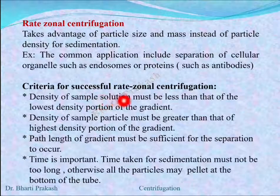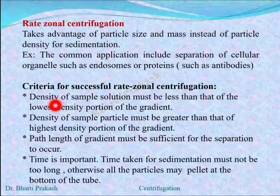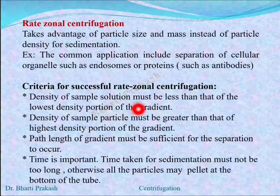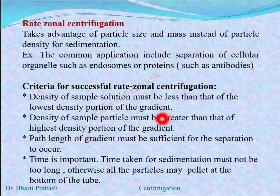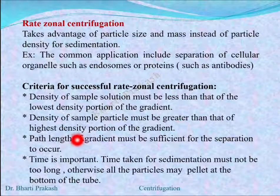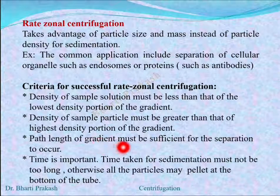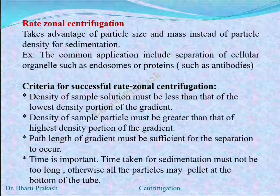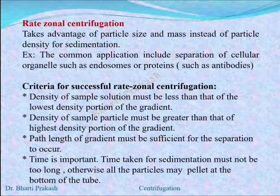The criteria for successful rate zonal centrifugation are: the lowest density of the sample solution must be less than that of the lowest density portion of the gradient. Similarly, the highest density of the sample particle must be greater than that of the highest density portion of the gradient. The path length of the gradient must be sufficient for the separation to occur. The time is very important — the time taken for sedimentation must not be very long, because if it is long, all the particles may pellet at the bottom of the tube.